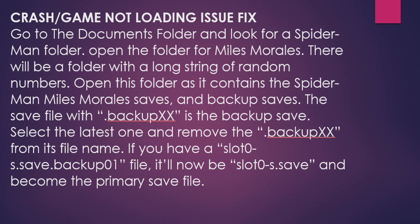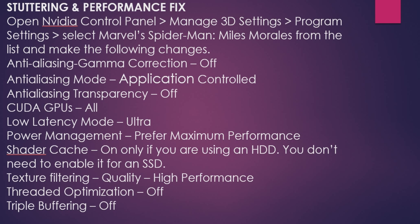The backup save file has '.backup XX' in its name. Remove '.backup XX' from the file name — for example, if you have 'slot0.backup XX', removing that extension makes it the primary save file. This may resolve crashes and the loading screen issue. Make sure you restart your system after doing this.